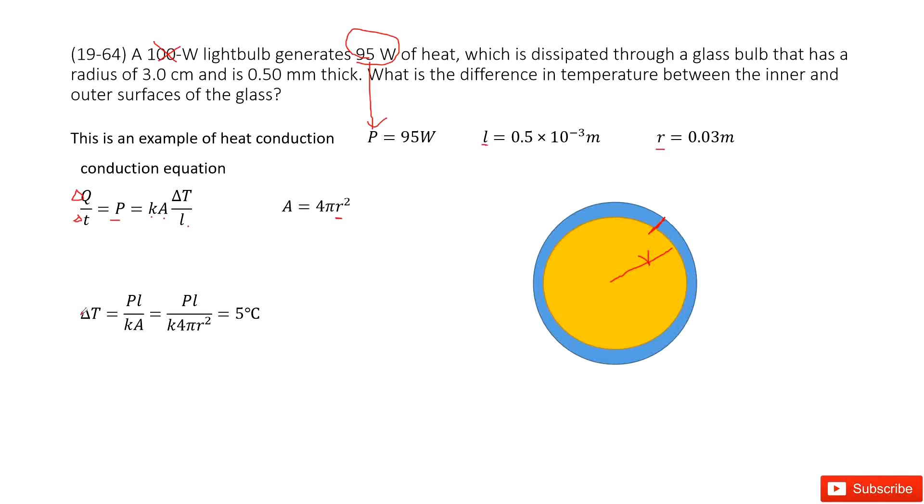Then we can write the equation for delta T as P L divided by K A, input A as 4 pi r squared. So we get the answer there. Thank you.